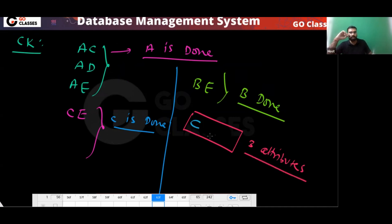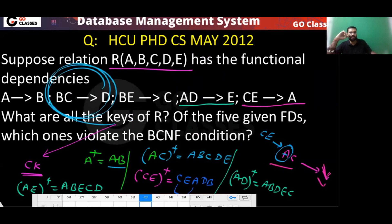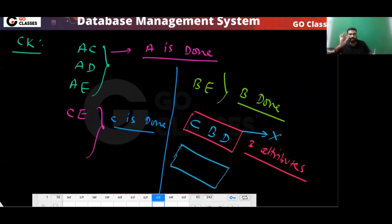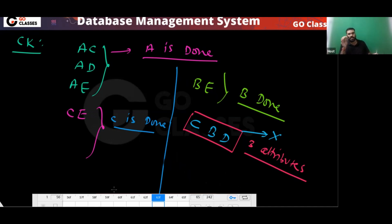You cannot put A or C in a three-attribute key. The remaining attributes are B, E, D — but BE is already a candidate key, so BED would be a superset and not a candidate key. These three — A, AC, AD, BE — are the only candidate keys. You must be certain that no other candidates exist, which is why this exhaustive analysis is done.